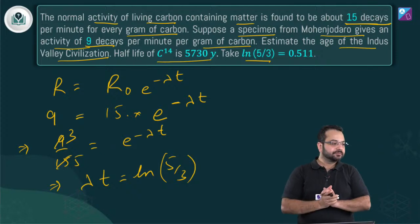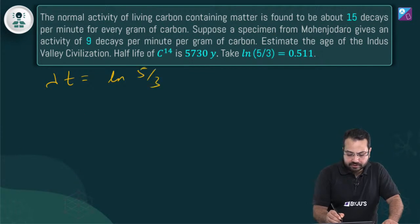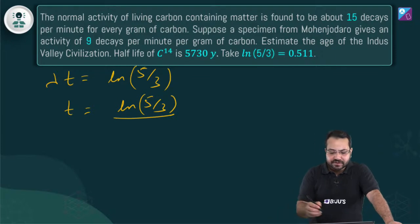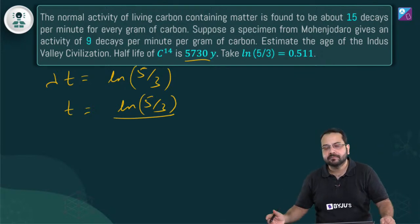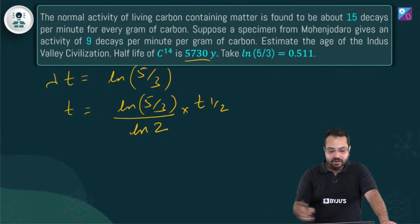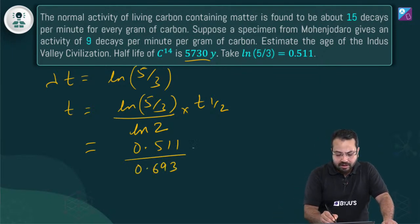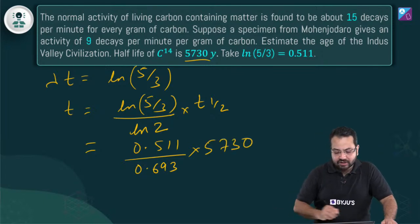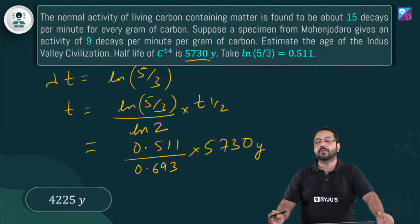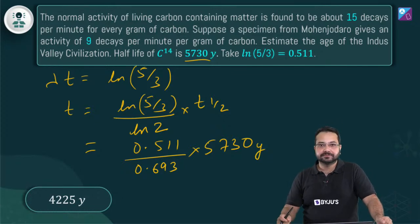Substituting: t = 0.511 / (0.693 × 5730) × (wait — t = ln(5/3) × t_half / ln 2 = 0.511 × 5730 / 0.693). This gives approximately 4225 years — that is the estimated age of the Indus Valley civilization. This is the concept behind carbon dating: using the known initial activity of living matter and the current activity to calculate how long ago the organism died.